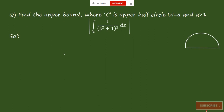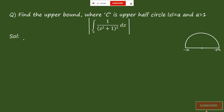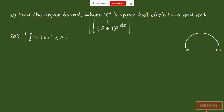Now for the problem: find the upper bound when C is an upper half circle with |z| = a and a > 1. The center of the circle is at the origin with radius a, so it goes from -a to +a. We need to find the modulus of the closed curve integral of 1/(z² + 1)² dz, using the ML inequality: |∫f(z)dz| ≤ M·L.